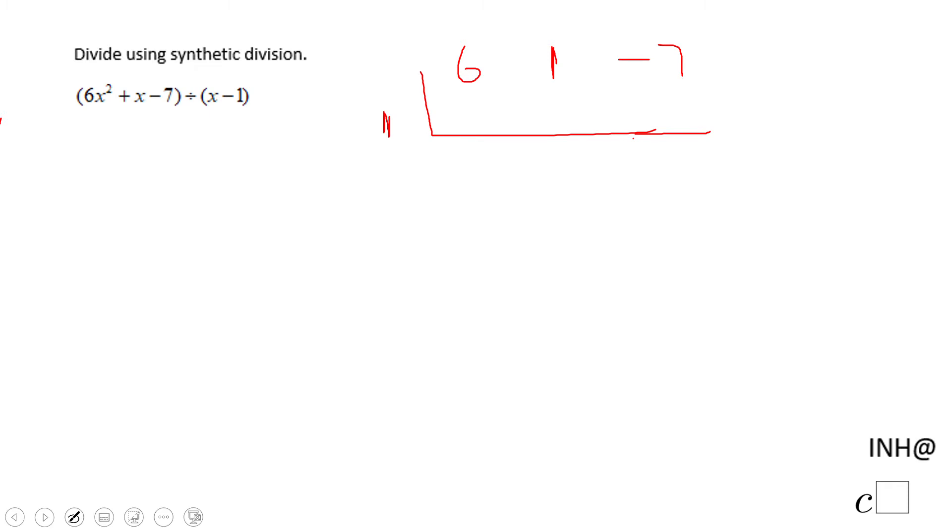Okay, so the first thing you're going to do is drop the 6, and then we have 1 times 6, that is 6. And here you need to be careful because you need to add this guy and we're going to get 7. 1 times 7 is 7, and again be careful, we're going to have to add here and get a remainder of 0.